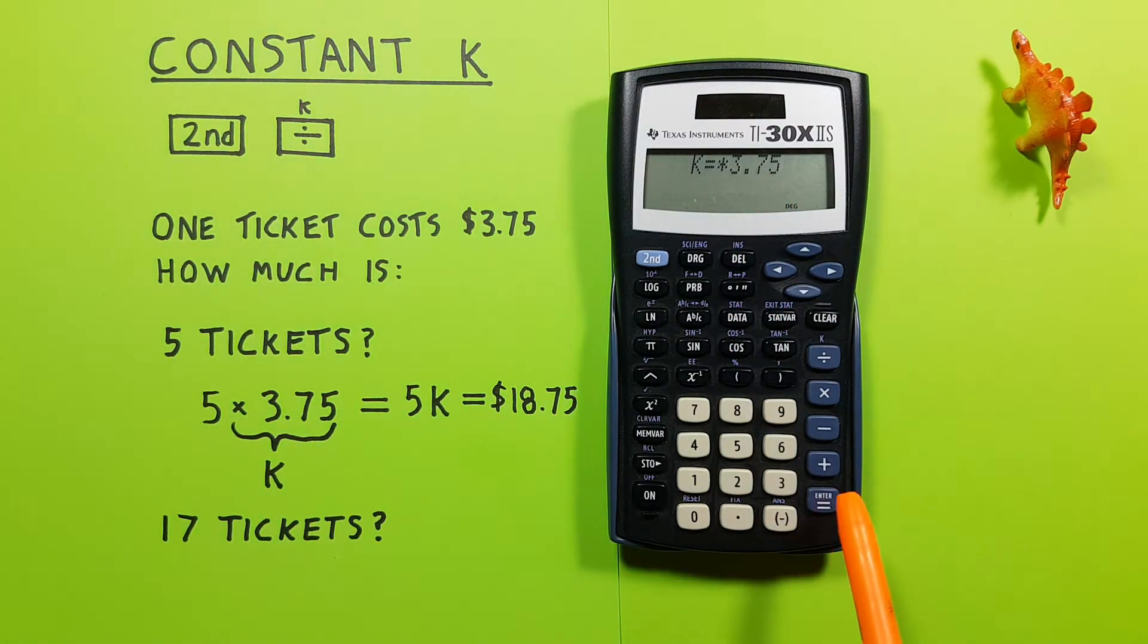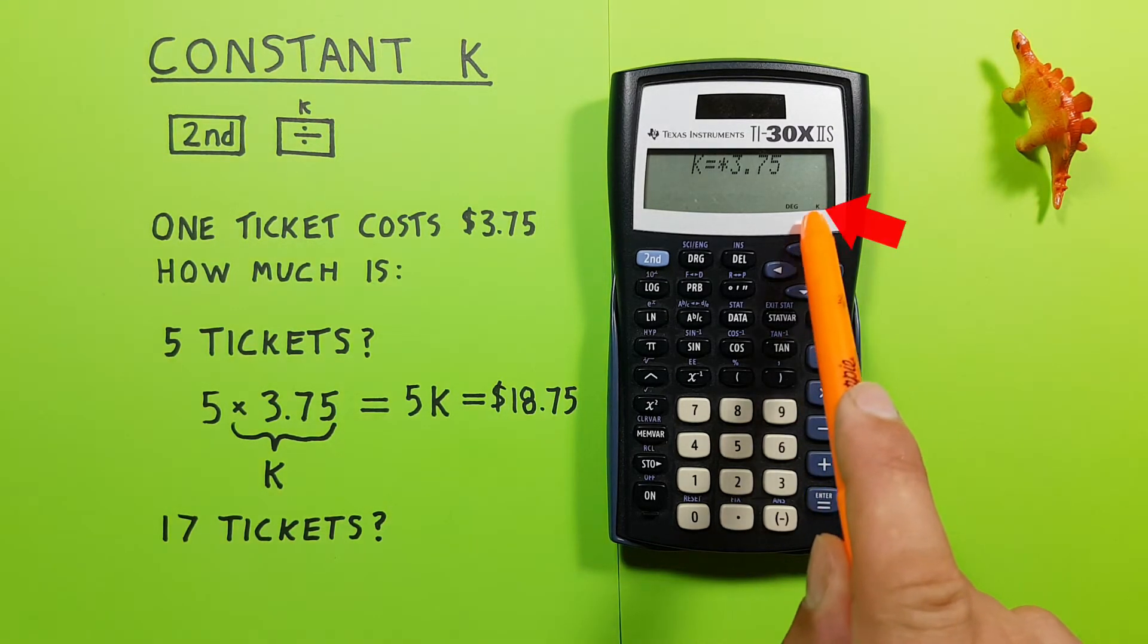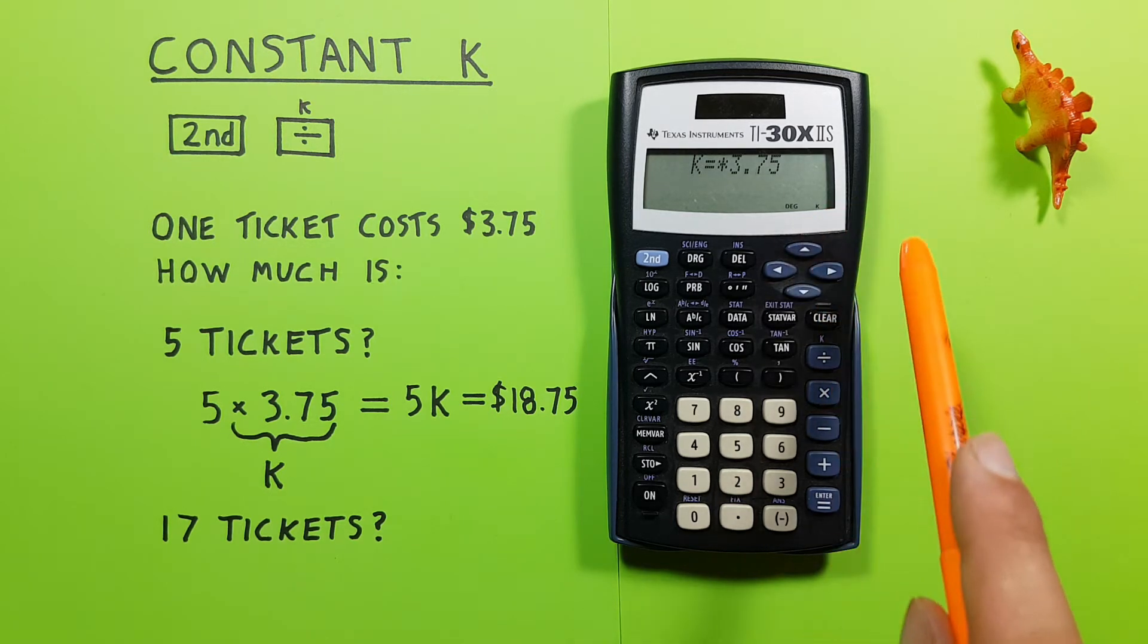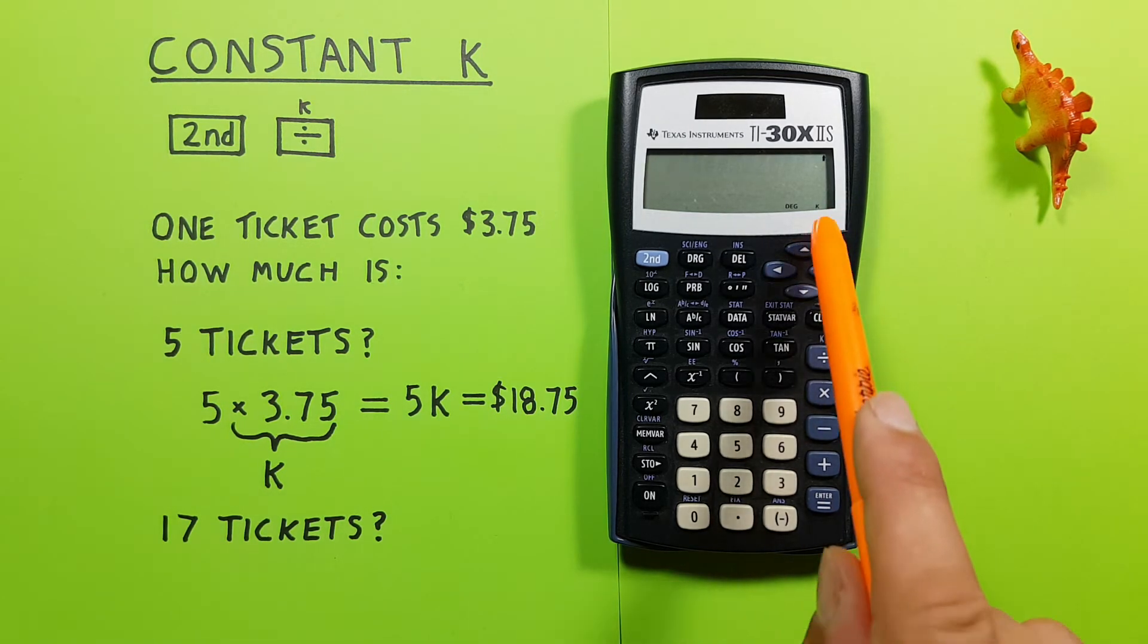And then we press enter, and see a K appear down at the bottom of our screen. That means our constant is active. Now we can clear out of this, see the K remains.